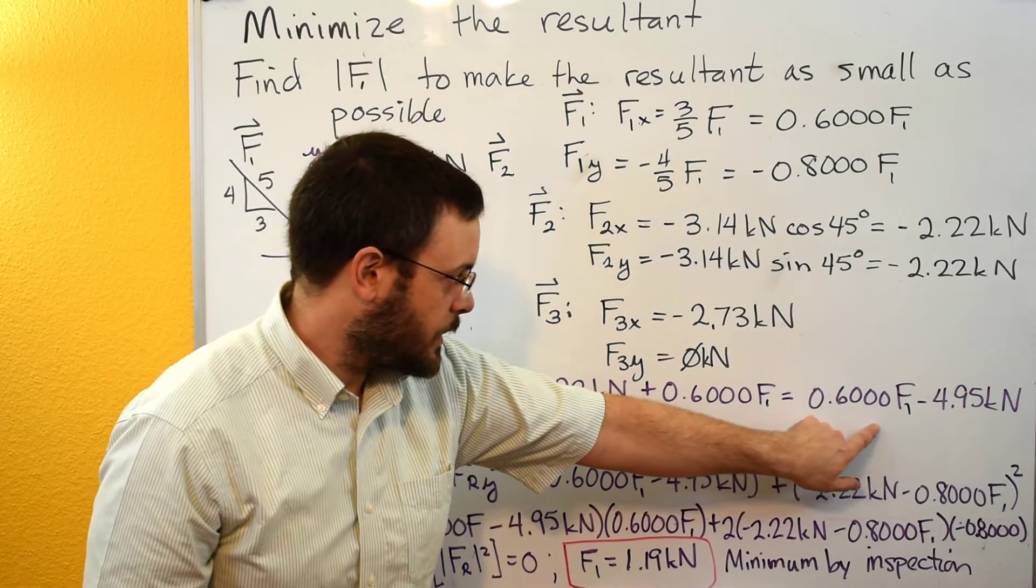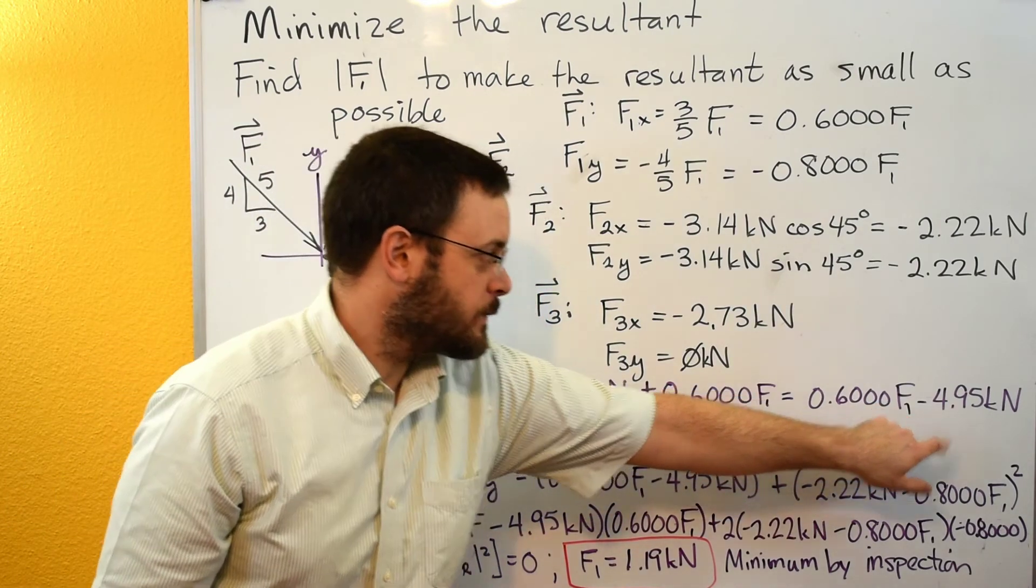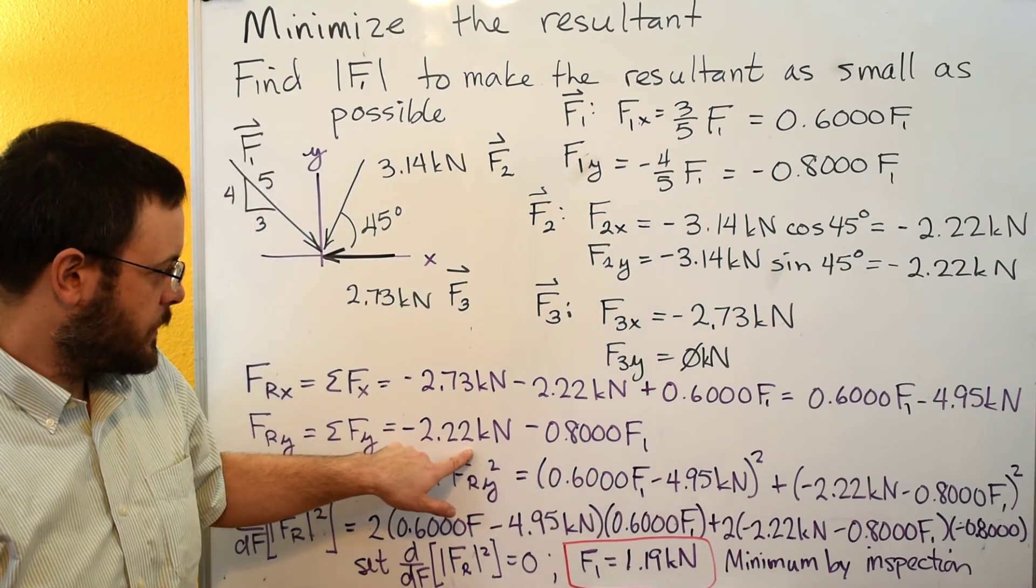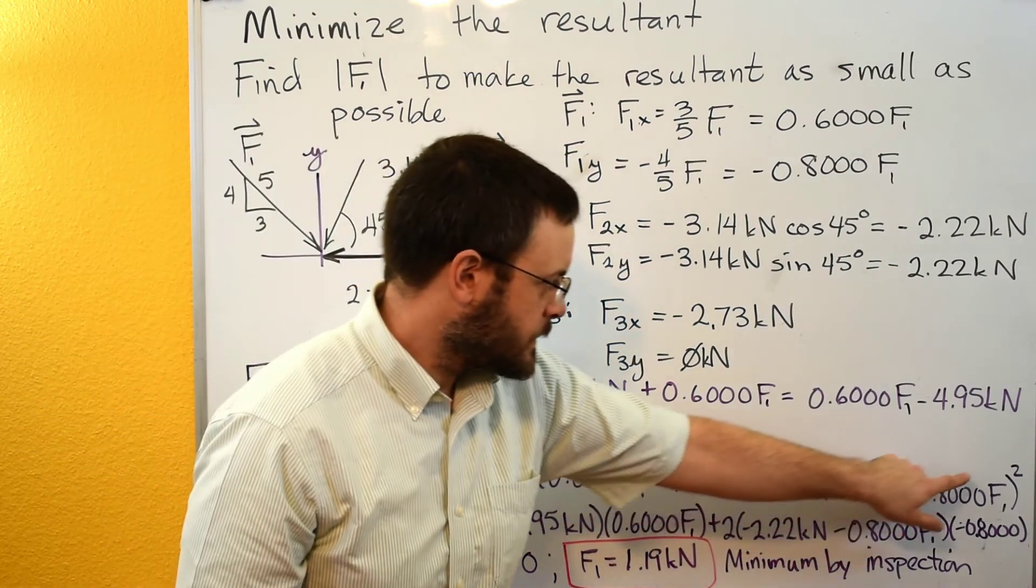So that would be our 0.6 F1 minus 4.95 squared, and that would be our negative 2.22 minus 0.8 F1 squared.